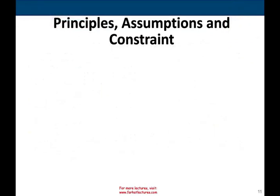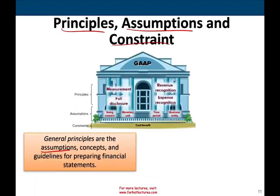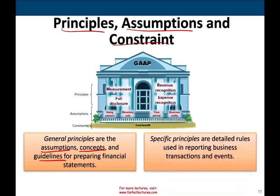Now we'll talk about the principles of accounting, assumptions, and constraints you'll see throughout the course. General principles are the assumptions, concepts, and guidelines for preparing financial statements. There are also specific principles — detailed rules used in reporting business transactions and events. Today we'll cover general principles including revenue recognition, expense principle, full disclosure, measurement, going concern assumption, monetary unit assumption, time period, business entity, and the constraints of cost-benefit and materiality.